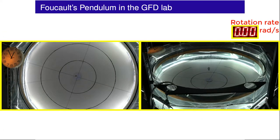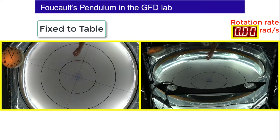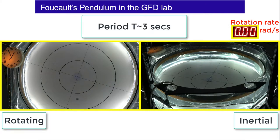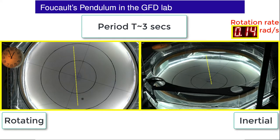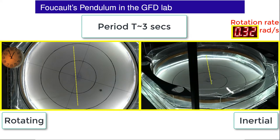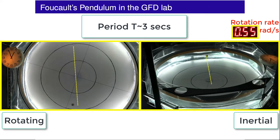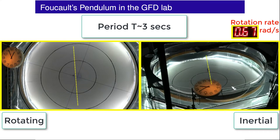We can use a rotating table in the GFD lab to model Foucault's pendulum. Here we have two views of a pendulum mounted above a rotating table — one from a camera fixed to the table, one from a camera fixed in the lab. These provide frames of reference that are rotating and inertial, respectively. We set the pendulum swinging and see that it has a period of about three seconds. The dashed lines are superimposed for reference. When the table is not rotating, the pendulum's path is straight back and forth in both frames of reference. We set the table spinning and observe the path of the pendulum to be deflected in the rotating frame of reference, yet remaining straight in the lab frame.